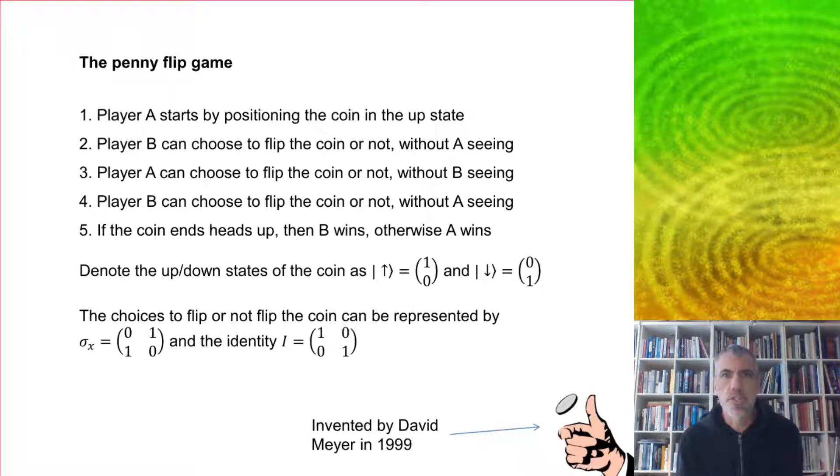It's this extremely simple game using a quantum device where we have two players A and B. Player A starts by positioning a coin in the up state, and player B can choose to flip the coin or not without A seeing. Player A can choose to flip the coin or not without B seeing. Player B can choose to flip the coin or not without A seeing again, and if the coin ends heads up, then B wins, otherwise A wins.